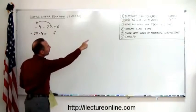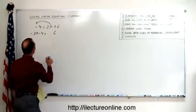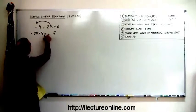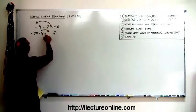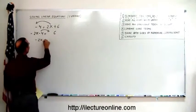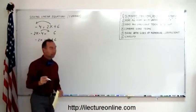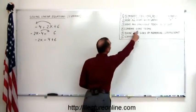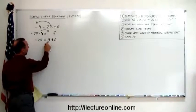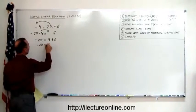The next step is move all the constant terms to the right side. I have a negative 4 — that's a constant, no variable — and I move that to the other side. When I do that, the sign changes, so minus 2x equals positive 4 plus 6. The next step is combine like terms. On the left side I only have one term; on the right side I have two, so I combine those. This gives minus 2x equals 10.